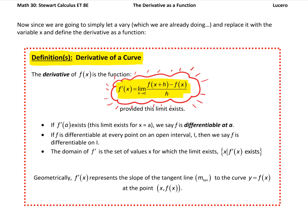A couple of notes: if the derivative exists — meaning the limit exists at x equals a — then we say the function is differentiable at a. If f is differentiable at every point on some open interval, then f is differentiable on that interval. The domain of f prime of x is the set of x-values for which that limit exists. And f prime of x represents the slope of the tangent line to the curve at the points (x, f(x)).